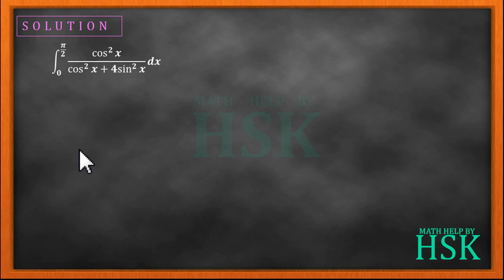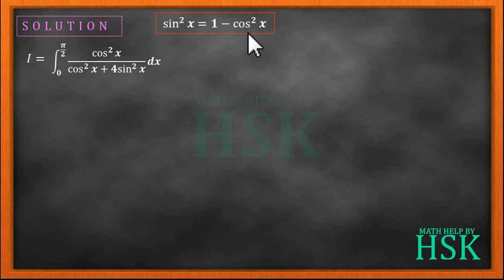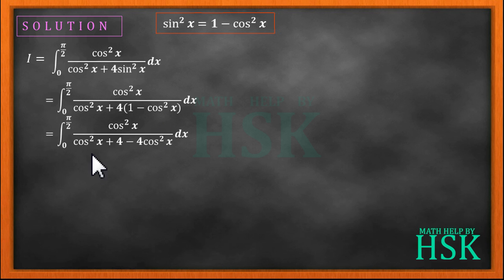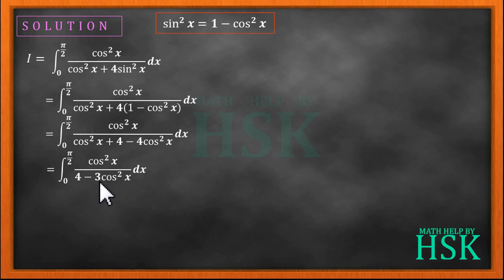Firstly I assume the definite integral as equal to I. To begin solving, I use the identity sin²x = 1 − cos²x and write the denominator as cos²x + 4(1 − cos²x), while all other terms remain as is. Further we can write the denominator as cos²x + 4 − 4cos²x. On simplifying the denominator we obtain I = integral of cos²x upon (4 − 3cos²x) dx from the limit 0 to π/2.